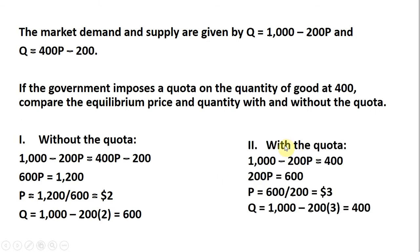With the quota, the quantity supplied will be 400. Firms can't bring more than 400 units to the market, so it's as if the supply curve becomes vertical at 400. Setting the demand equation equal to 400 and solving here,